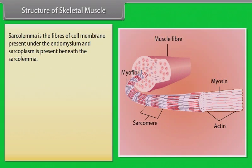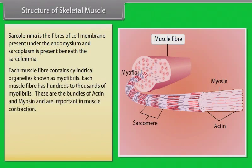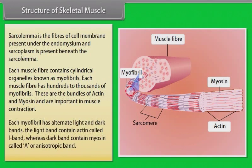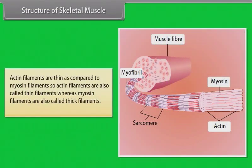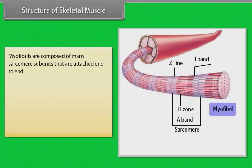Sarcolemma is the fiber cell membrane present under the endomysium, and sarcoplasm is present beneath the sarcolemma. Each muscle fiber contains cylindrical organelles known as myofibrils. Each muscle fiber has hundreds to thousands of myofibrils, which are bundles of actin and myosin and are important in muscle contraction. Each myofibril has alternate light and dark bands: the light bands contain actin, called the I-band, whereas the dark band contains myosin, called the A-band or anisotropic band. Actin filaments are thin compared to myosin filaments, so actin filaments are called thin filaments, whereas myosin filaments are called thick filaments.